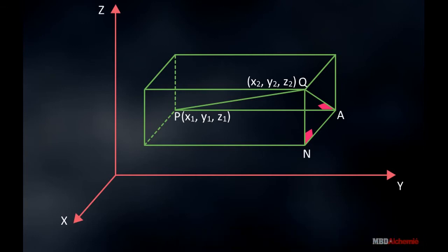Now we know the coordinates of P and Q. Let's find the coordinate of A and N. Now we see, as we move from point P to A, it means displacement about Y axis. So, only Y coordinate changes.